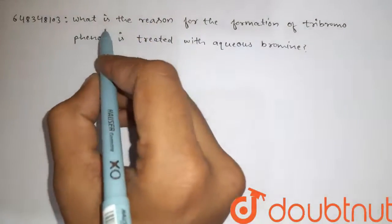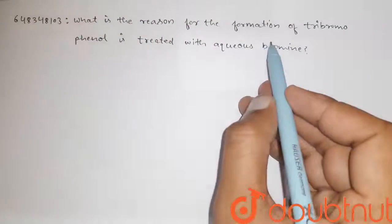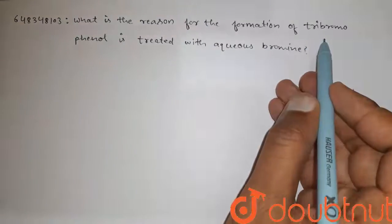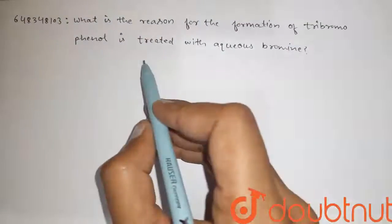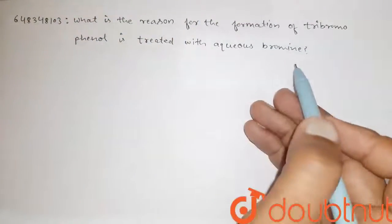Hi guys, here is the question: what is the reason for formation of tribromophenol when phenol is treated with aqueous bromine?